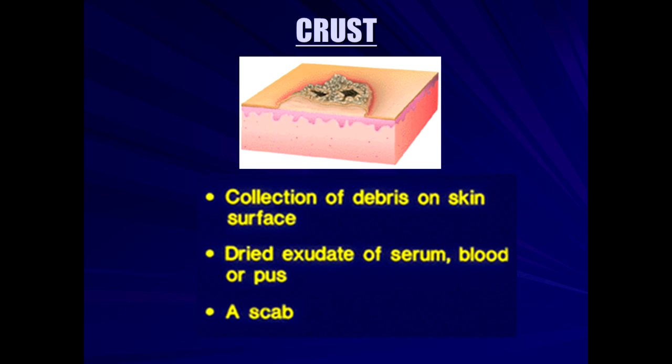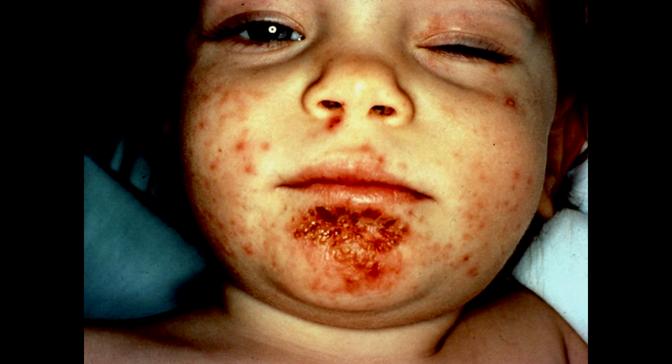Crust: you see crusting, scabbing, purulent drainage, or bloody drainage — described as a crusting reaction. This is common in staph or strep impetigo. When areas become crusted, they leave that honey-colored crust described as impetigenization — an impetigo-like process, typically perioral, due to saliva and breakdown in the skin, allowing staph and strep to proliferate.